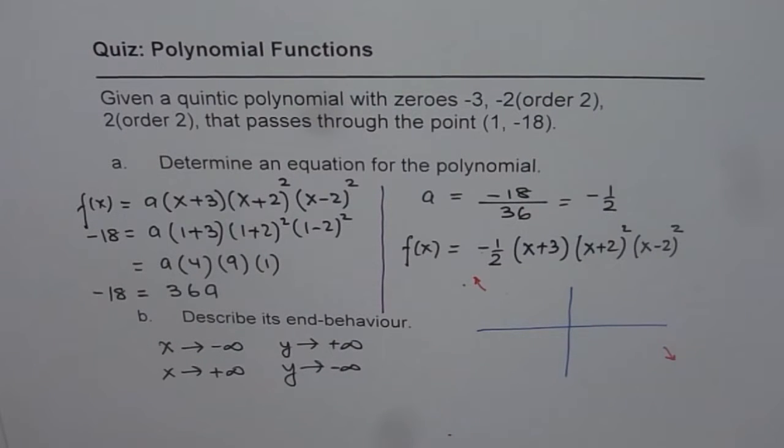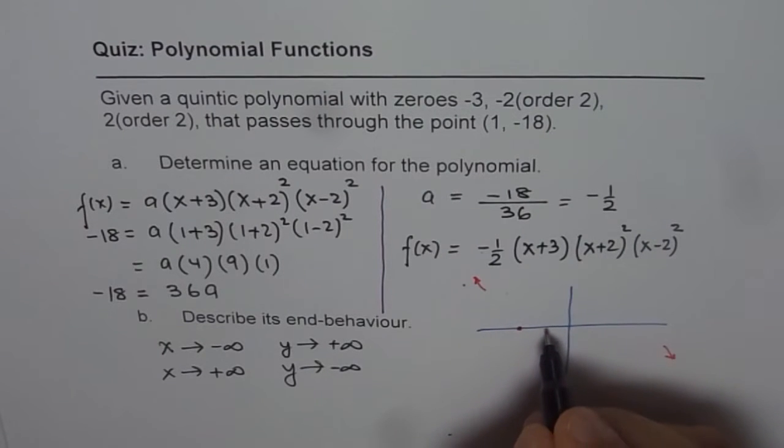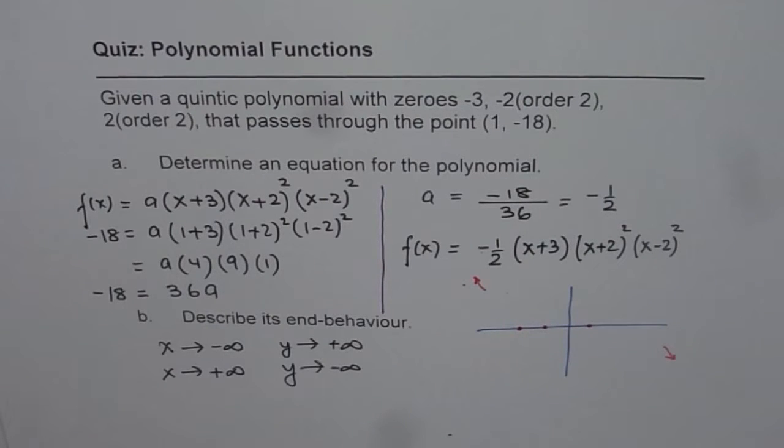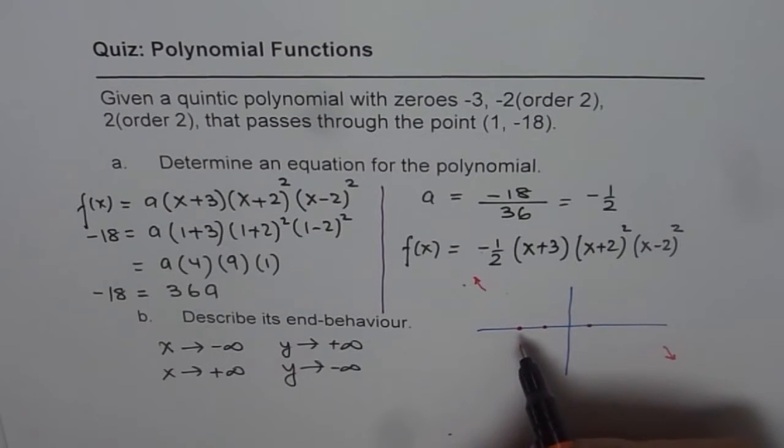Now let us also try to sketch this function. We know the zeros are at minus 3. Let us say this is minus 3 for us. Minus 2, let us say this is minus 2. And then one we have at 2. Now at minus 3, it is a linear zero. So it will just cross the line here, so it will kind of crossing like this.